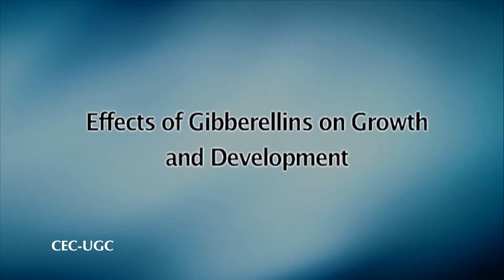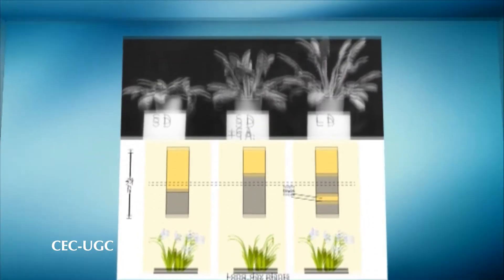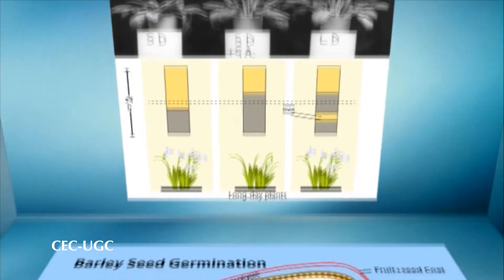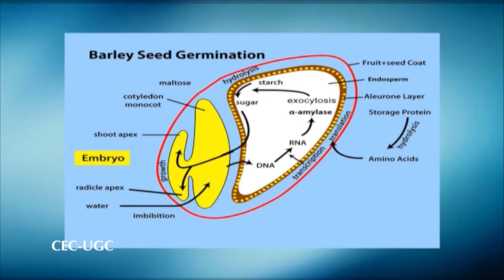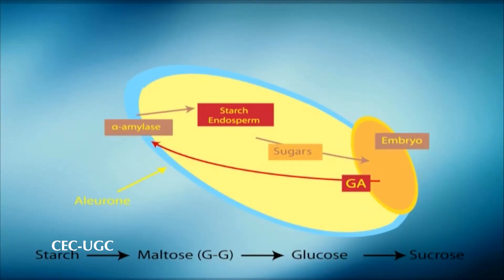Active gibberellins show many physiological effects, each depending on the type of gibberellin present as well as the species of the plant. Physiological processes stimulated by gibberellins include: stem elongation by stimulating cell division and cell elongation; bolting or flowering in response to long days; breaking seed dormancy in plants that require stratification or light to induce germination; enzyme production such as alpha-amylase in germinating cereal grains for mobilization of seed reserves; maleness in dioecious flowers; parthenocarpic development of fruits; and delay of senescence in leaves and citrus fruits.